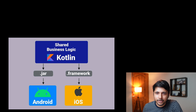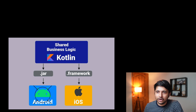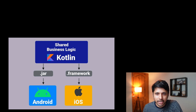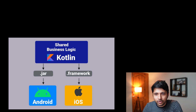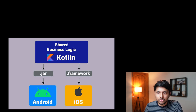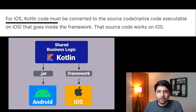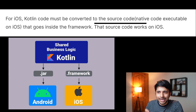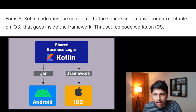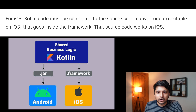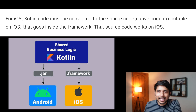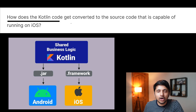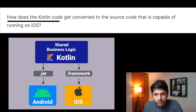So now it's time to learn how does it work. First, we write the shared code in Kotlin. For Android, it gets converted to Java bytecode that can be executed in the JVM — Android already has a virtual machine that is easily capable of running it. But what about iOS? How can it run Kotlin — can we do it without the virtual machine? For iOS, the Kotlin code must be converted to native code that is executable on iOS devices.